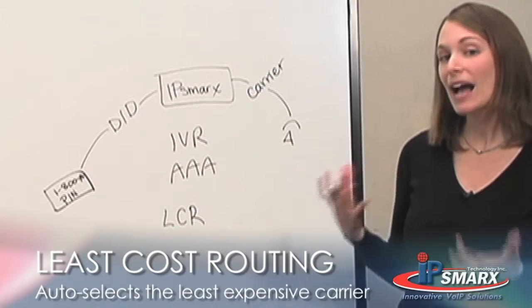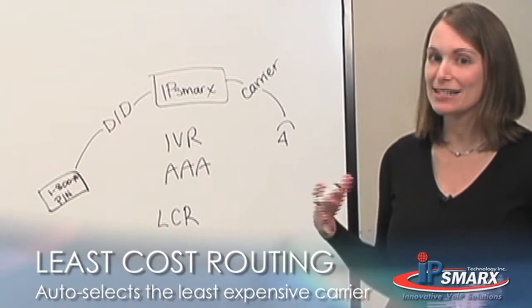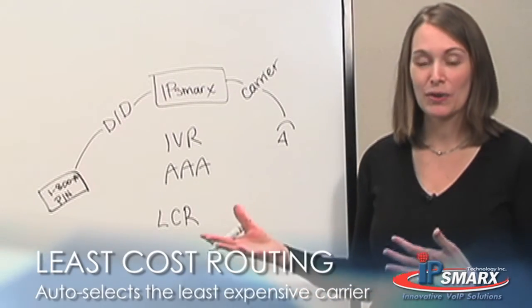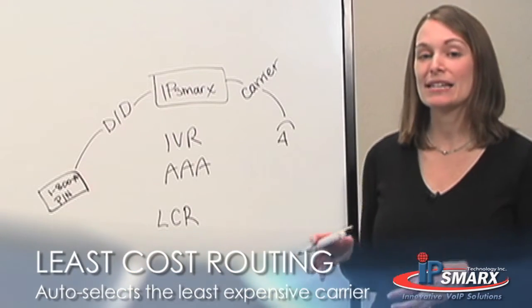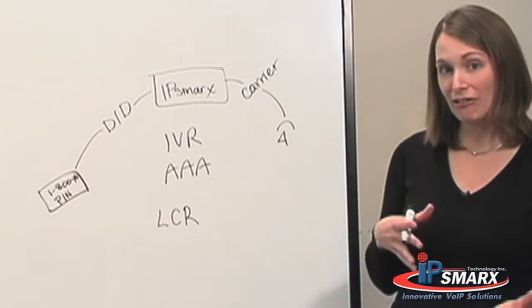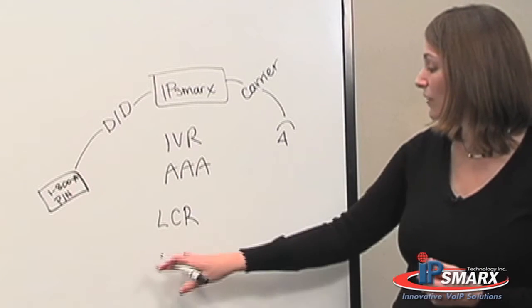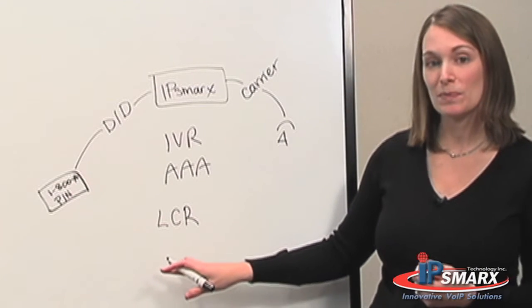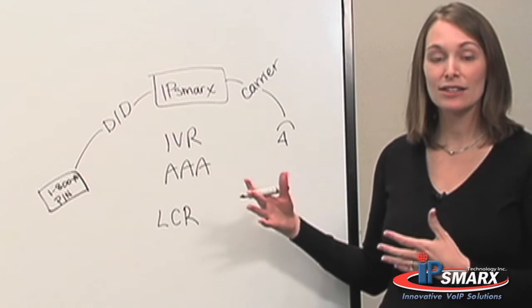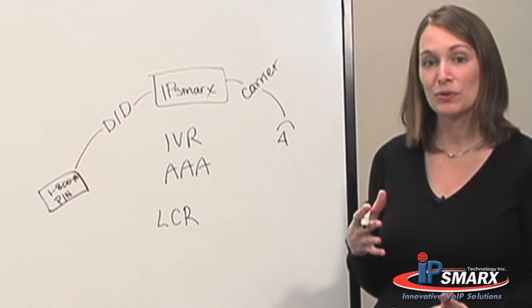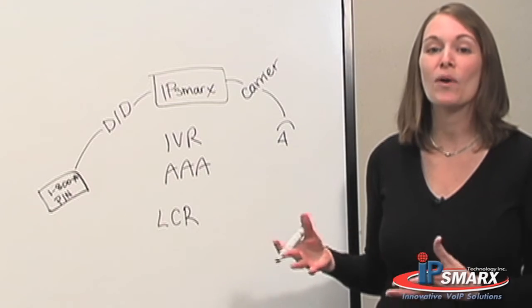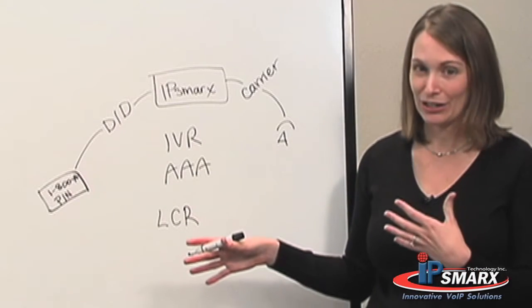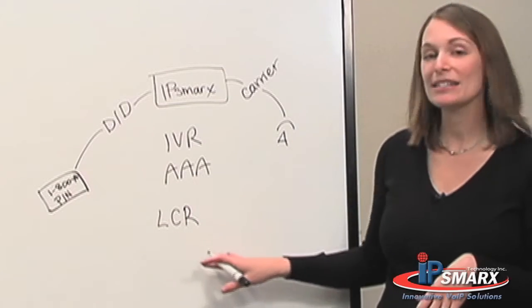So for example, let's say IP Smarx has the best rates to India but you have another carrier who has better rates to Africa. What you can do is input both carrier rate tables and then take advantage of our least cost routing system so that if a customer is calling India, the call will automatically be routed through the IP Smarx carrier. If the customer is calling Africa, the call will automatically go to the other carrier. So this is called least cost routing.